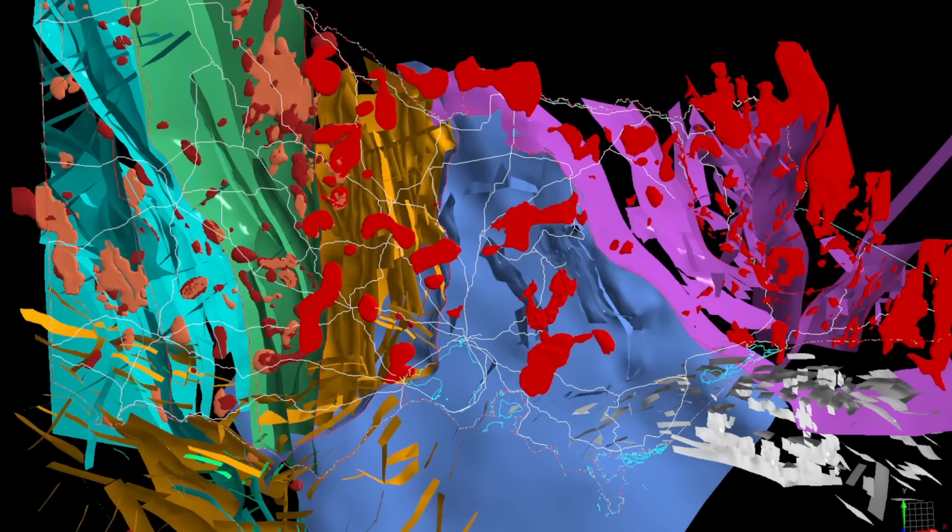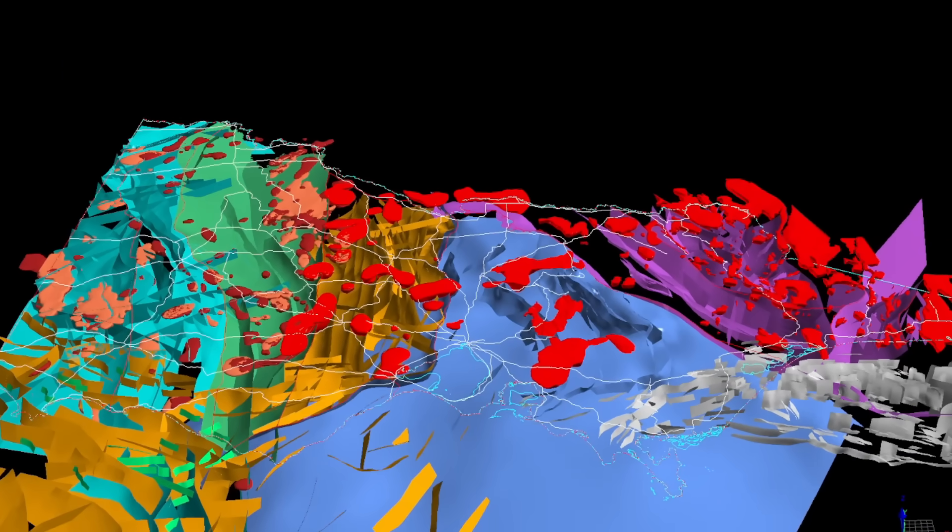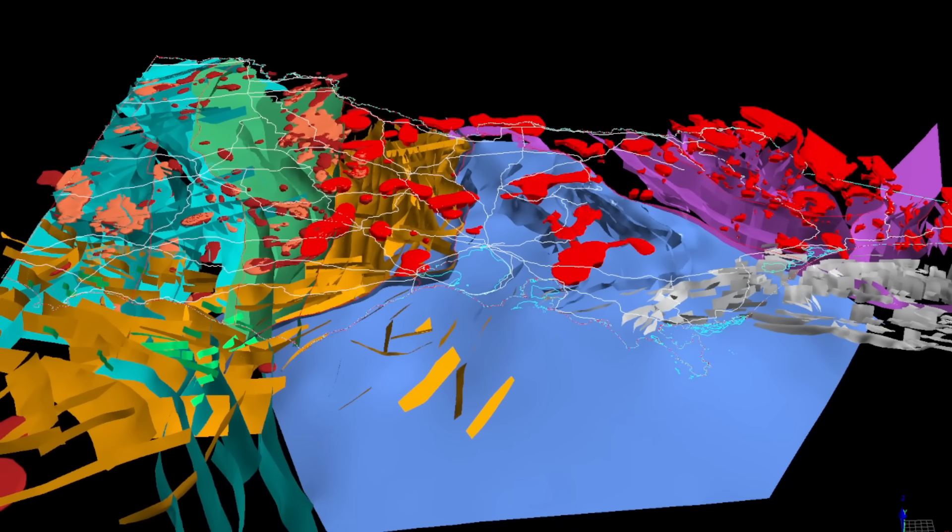This is a 3D scan of the subsurface of Victoria. It's mapped fault lines and granitic intrusions and it's just incredible to see.